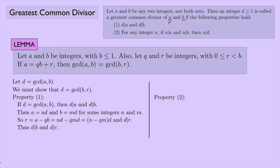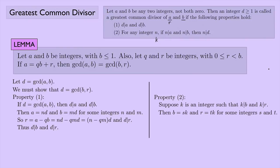Let's look at property two. Suppose that I have an integer K, and K divides B and K divides R — K is playing the role of N here. So I need to show that if K divides R and K divides B, then K divides D. If K divides B and K divides R, I can do a similar thing as in the proof for property one: I can say B is S times K and R is T times K, for some integers S and T.